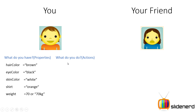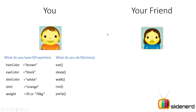What actions does this person perform — or what actions do you perform? Well, you eat, sleep, walk, run, party, and you can do many other things, but here I've just taken five of them.